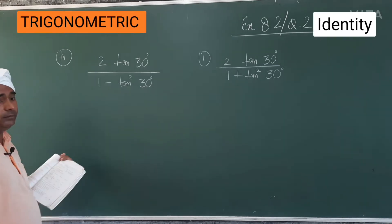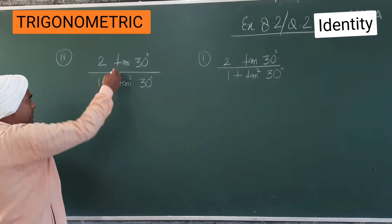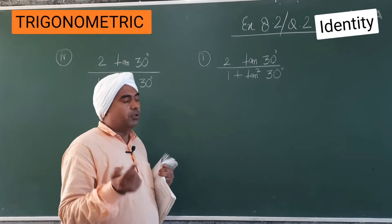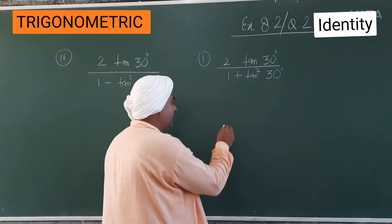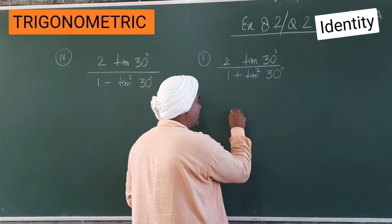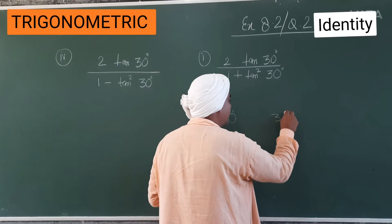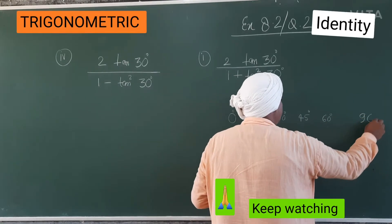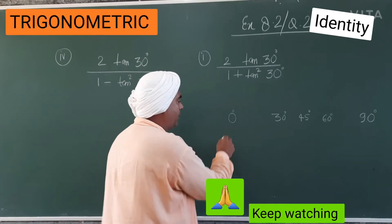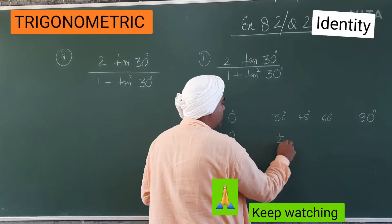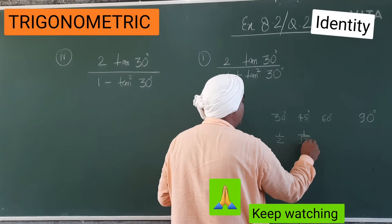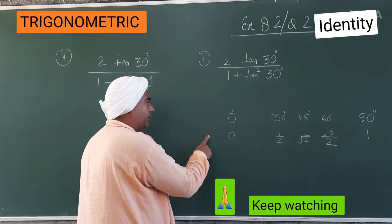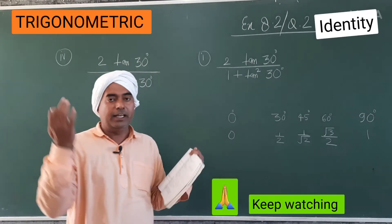So first we will solve this. As I have told you in my earlier videos, what you have to learn are the values. You have to keep in your mind: 0°, then 30°, then 45°, then 60°, and then 90°. The sine values are 0, 1/2, 1/√2, √3/2, and 1. I know these — they are written in my mind.